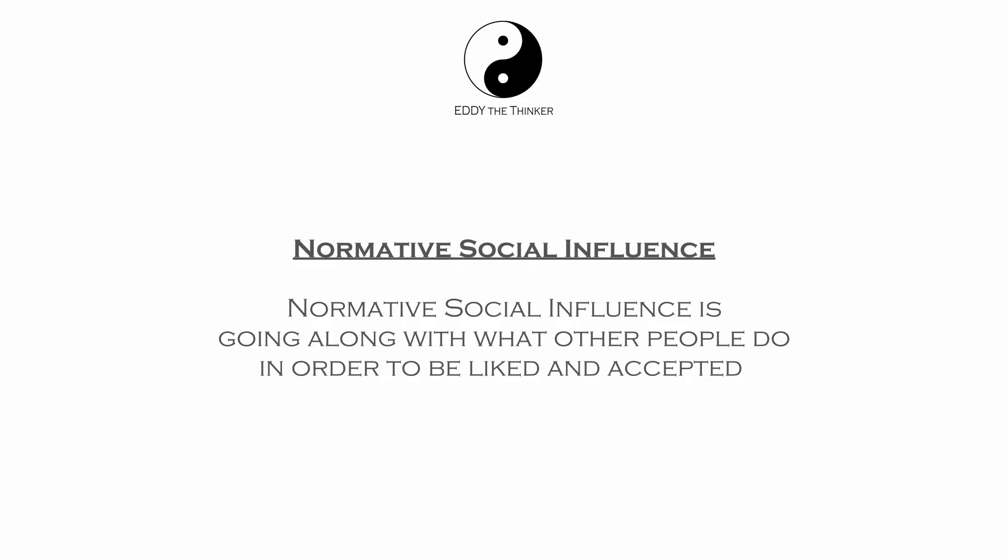The second reason why people conform or change their behavior is because they want to be liked or accepted by the members of the group. This is called normative social influence. Normative social influence is going along with what other people do in order to be liked and accepted.